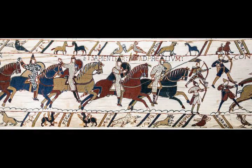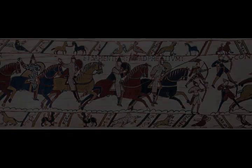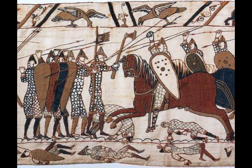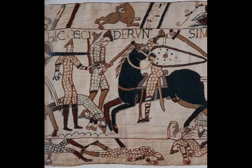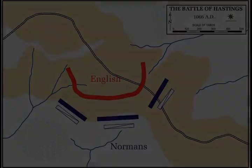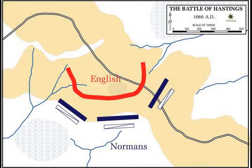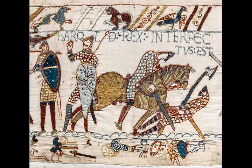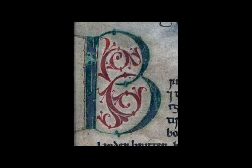A further rebellion in 1070 by Hereward the Wake was also defeated by the king at Ely. Battle Abbey was founded by William at the site of the battle. According to 12th-century sources, William made a vow to found the abbey, and the high altar of the church was placed at the site where Harold had died. More likely, the foundation was imposed on William by papal legates in 1070. The topography of the battlefield has been altered by subsequent construction work for the abbey, and the slope defended by the English is now much less steep than it was at the time of the battle. After the dissolution of the monasteries, the abbey's lands passed to secular landowners. In 1976 the estate was put up for sale and purchased by the government with the aid of some American donors who wished to honour the 200th anniversary of American independence. The battlefield and abbey grounds are currently owned and administered by English Heritage and are open to the public.